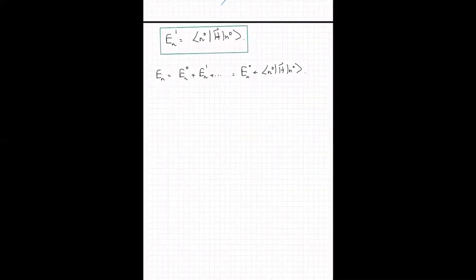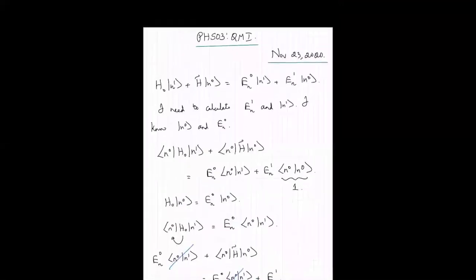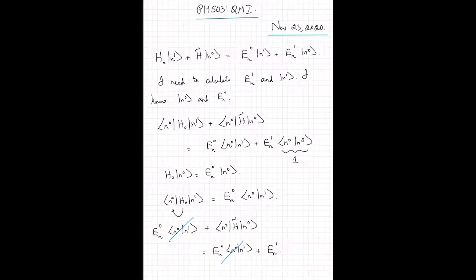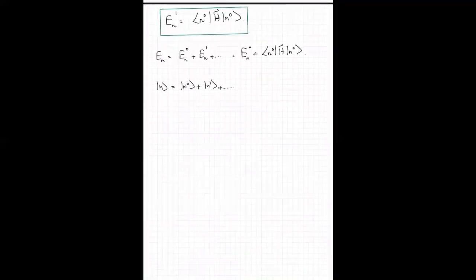To calculate the correction to the eigenkets, I will go back to the same equation again but this time project it out with a different eigenket. Remember that to first order, I'm going to write |n⟩ as |n0⟩ plus |n1⟩ plus higher-order terms that I don't care about. So I need to calculate |n1⟩.